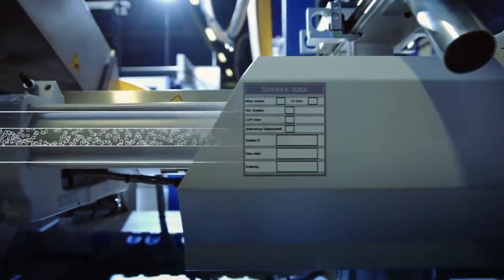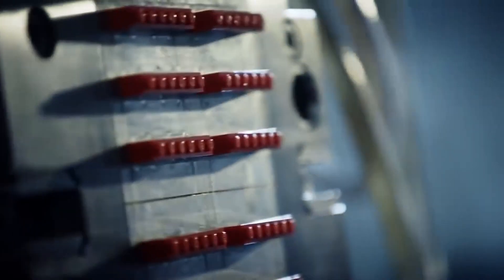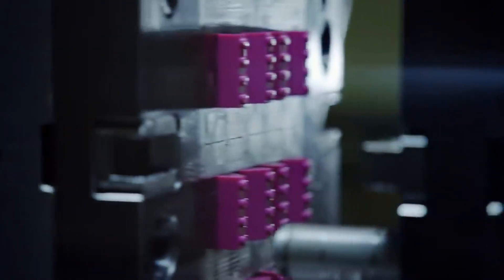This molten plastic is then injected into molds that form the shape of the Lego bricks. Each mold is meticulously designed to ensure the bricks fit together perfectly.